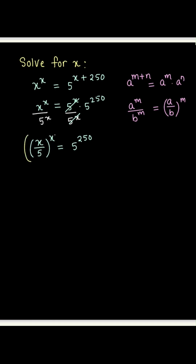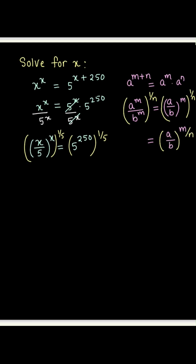We'll now take the fifth root of both sides, and this choice of taking the fifth root is a very deliberate choice. What it does is make the left-hand side x over 5 raised to the power x over 5 — pretty neat, right? We'll now manipulate the right-hand side to bring it in the form such that it is also some number raised to the power that same number.